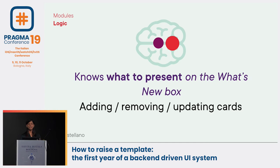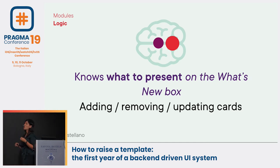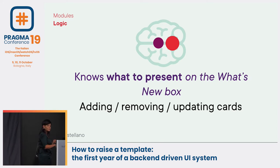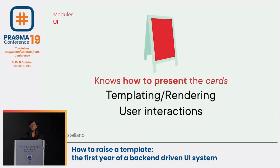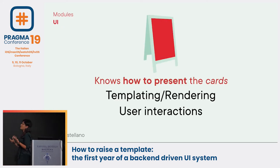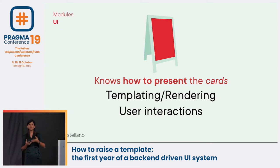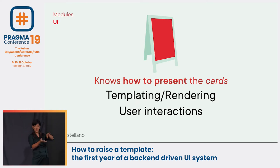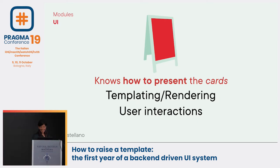The Logic module knows what to present in the What's New Box — business logic for adding, removing, updating, and fetching cards relevant to users, inside the device, not from the back-end. Last but not least, the UI module knows how to present the cards. It gets the JSON response, creates views, and sends them to the app to be displayed. The UI module also gets user interaction packages and sends them back to the Communication module, which sends them to the back-end.